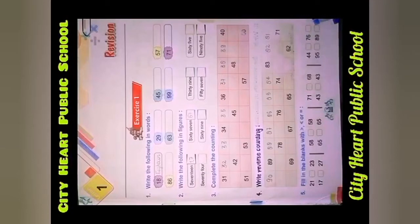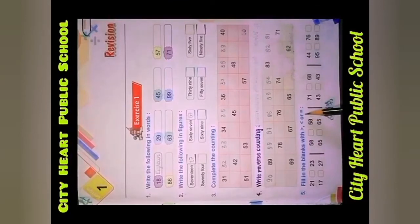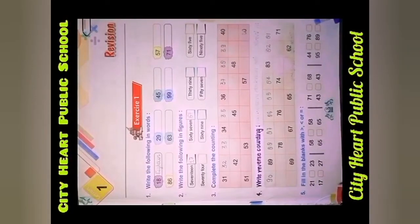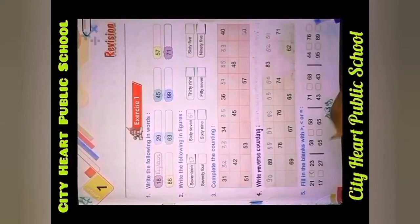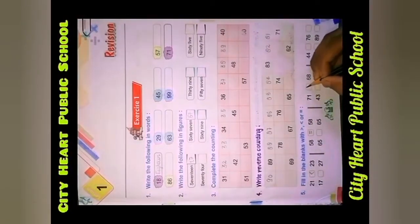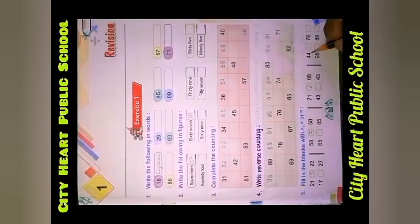Then question number 5: Fill in the blanks with greater than, or less than symbol, or is equal to. Toh hamein yeh symbols use karke yeh jo blanks hain, inhe complete karna hai, fill karna hai. So, 21 is less than 23, toh hame woh sign lagayenge. 58 is equal to 58, toh hamein yeh symbol lagayenge. 71 is greater than 68, hame yeh symbol lagayenge. Isi tarah baaki aapko karna hai — 44, 76, 17, 27.